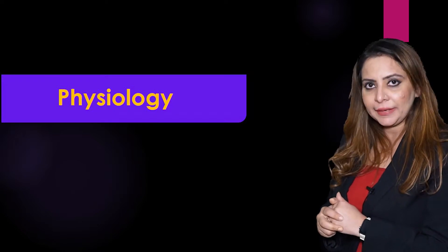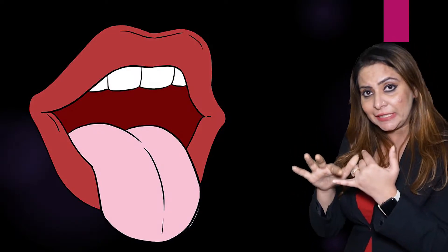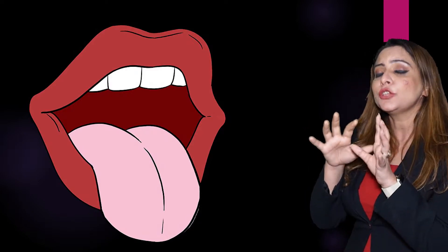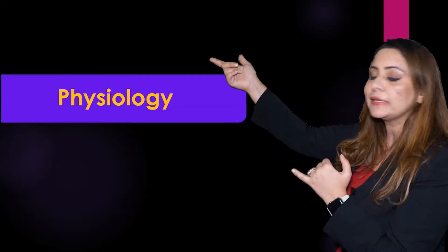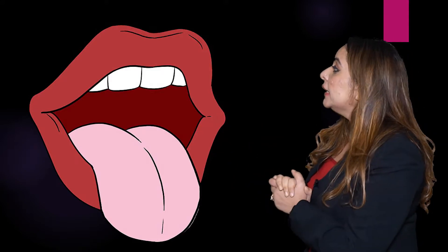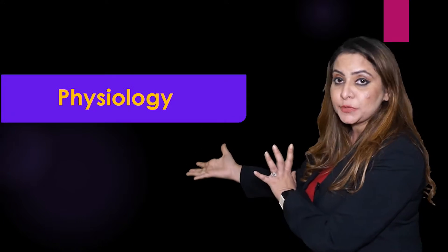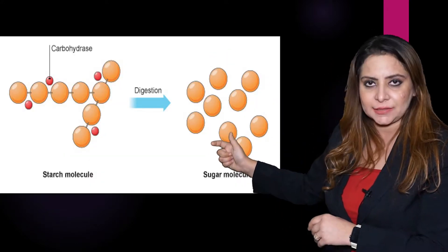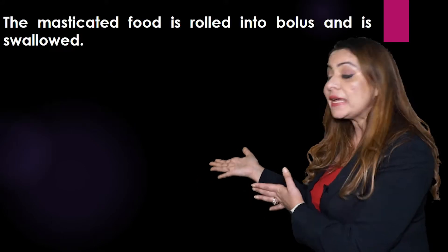The first part is the mouth, also termed as the buccal cavity. Inside the mouth we have the tongue, the teeth, and salivary secretions. The mouth leads into a tubular structure called the esophagus, also termed the food pipe, which connects the mouth to the next structure.